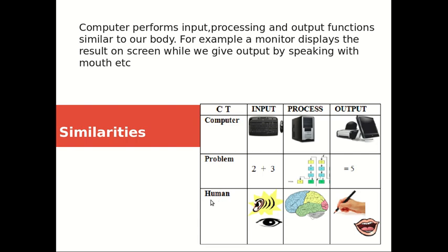How does our brain do the same? For example, 2 plus 3 — our brain brings attention through our eyes, and we write it with our hands. The brain passes instructions and we write 2 plus 3 equals 5, or if we have to say it, we say it with our mouth. These are the similarities between computer and humans.